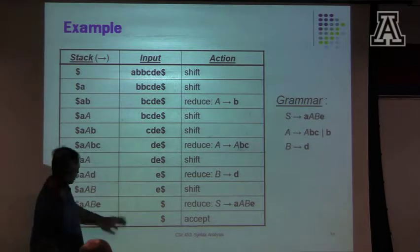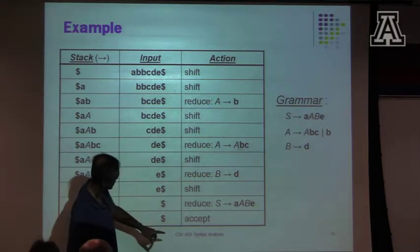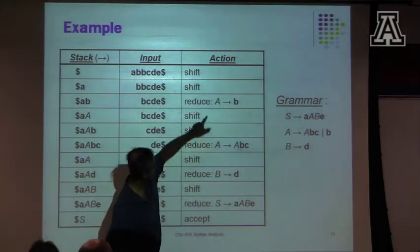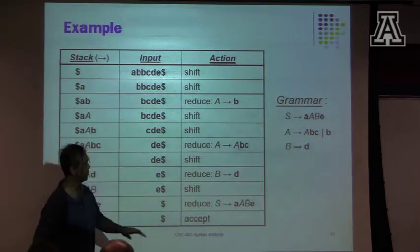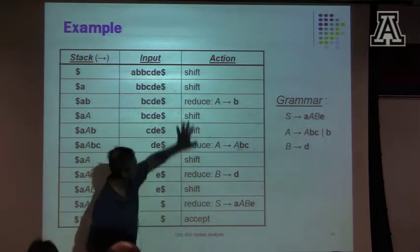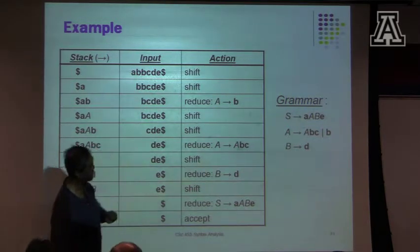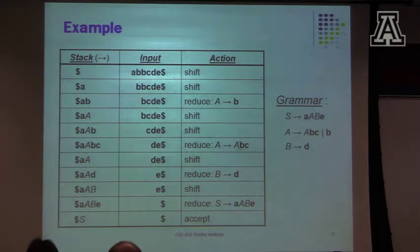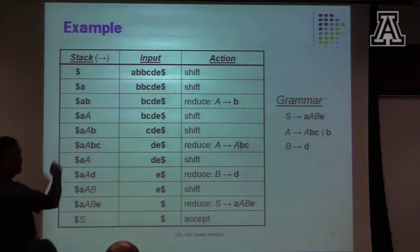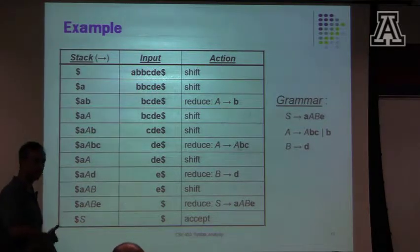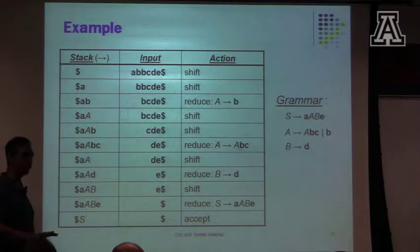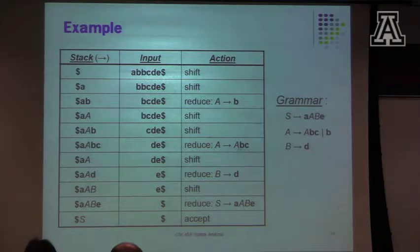If I now take the sequence of actions and look at the sequence of reduce actions and play them backward in that order, what I have is a rightmost derivation of the string. So that's what a shift-reduce parse is doing: a bunch of shift actions, and then every so often it decides to do a reduce. All of the complexity of that is in this table, so the parser itself has really simple logic.